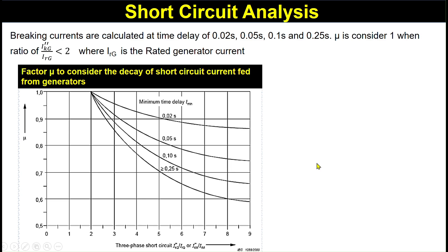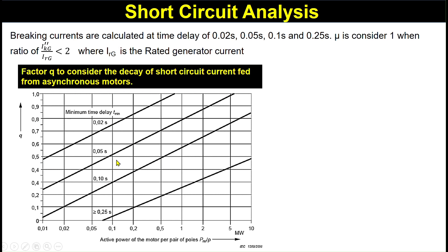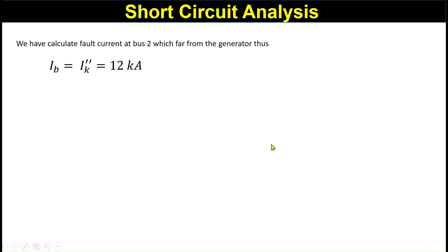You can also calculate the value of μ from this equation or from the curves, which show the ratio of ik''_g to ir_g against time delay. Similarly, the value of q can be read from curves showing the motor per-unit active power (P_M / P_r) against q at various time delays. Since we calculated the fault current at bus 2, which is far from the generator, ib equals ik''. You can verify this when performing the network analysis of this example.